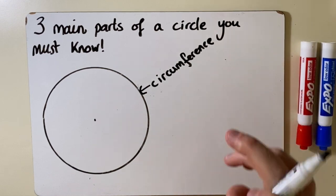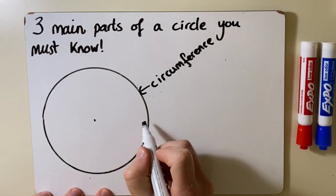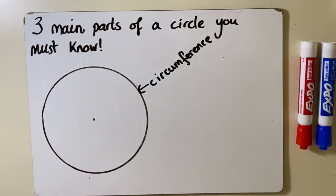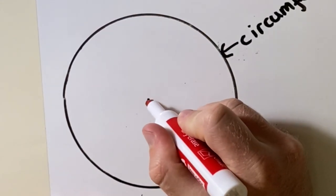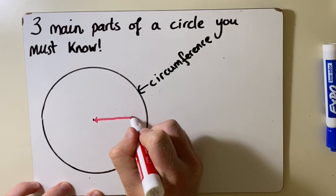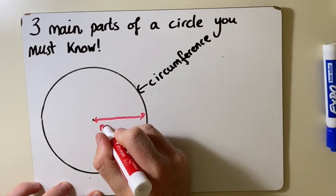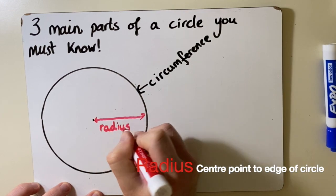The next one that you need to learn is when we measure from the edge of the circle to the center point of the circle. So I'm going to use a red color to show this. So from the center point of the circle to the edge of the circle. This is called the radius, spelled R-A-D-I-U-S.